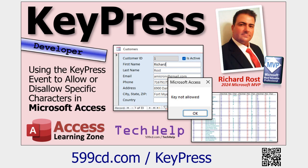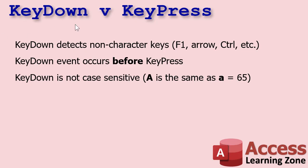In yesterday's video we learned about the key press event. Key press is cool and has a lot of uses, but it generally only works with characters you type on the keyboard — like letters and numbers — but it doesn't work with special keys like F1, Ctrl+T, arrow keys, and those kinds of things. The key down event will detect non-character keys: F1, arrow, control, those kinds of things. Key down occurs before key press in case you're using them both together.